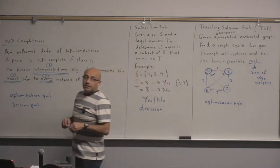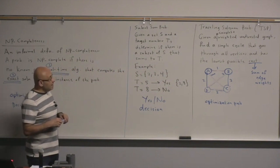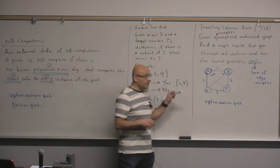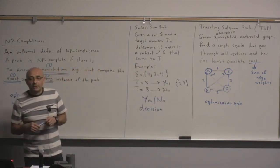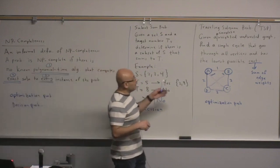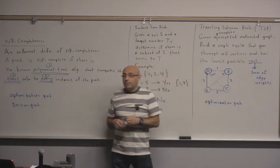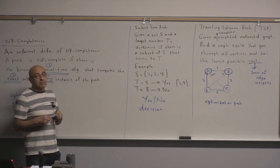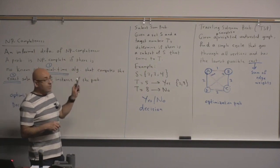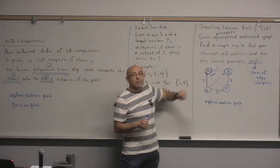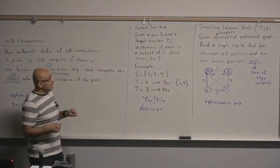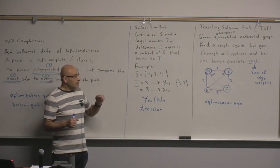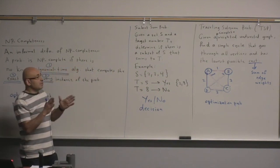In NP-completeness theory, there is an advantage to working with decision problems. In fact, everything we will study in NP-completeness will be based on decision problems. The traveling salesman problem is an optimization problem, but we can recast it as a decision problem — and if we have a solution to the decision problem, we can use it to solve the optimization problem.